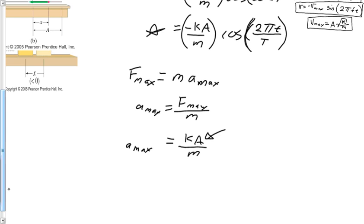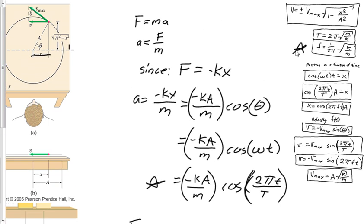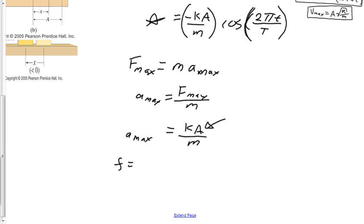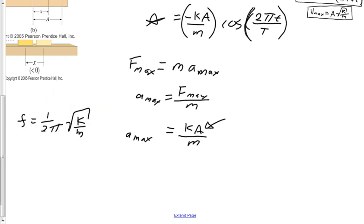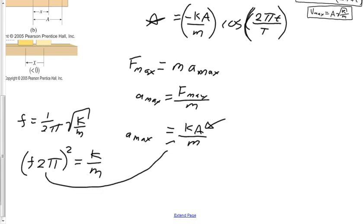We can also express acceleration max in terms of frequency. Since frequency f equals 1/(2π)·√(k/m), we can solve for k/m: multiplying each side by 2π and squaring gives (2πf)² equals k/m. Substituting this in: acceleration_max equals (2πf)² times A.